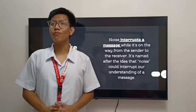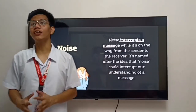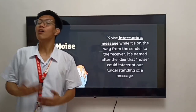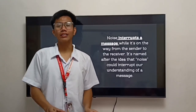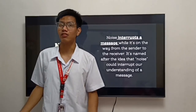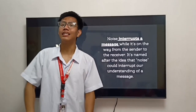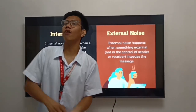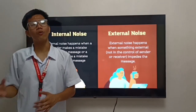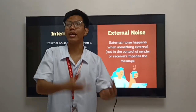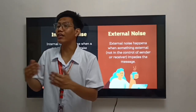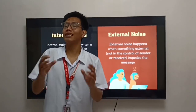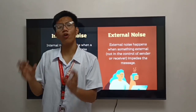Now let's proceed to the fourth element: noise. The key concept is that noise interrupts a message. In communication, noise is anything that stops a receiver from fully comprehending the message coming from the sender. Noise can exist both internally and externally. Internal noise exists during the process of encoding and decoding — for example, noise happens in encoding when we misspell a word in a text, and in decoding when someone misinterprets a sentence when reading an email. External noise exists when someone is speaking with a heavy accent, or when the sender mumbles or whispers when speaking.